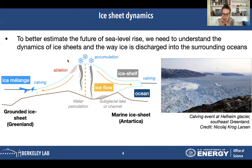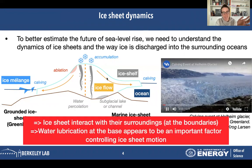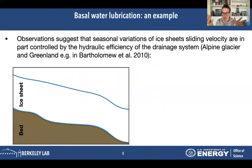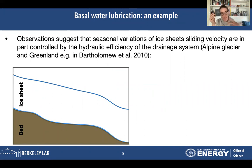Let's consider a simple example that illustrates one way water lubrication impacts ice sheet motion. Observations suggest that there's a seasonal cycle that exists — every year we see the effect of basal water on ice sheet motion. Every summer, as temperature rises, the surface of the ice sheet melts and water percolates through the ice sheet to reach the base, where it forms a sheet between the ice and the soil.